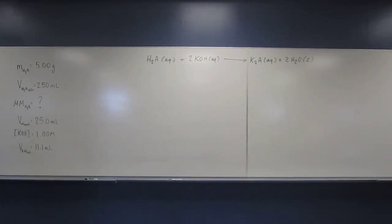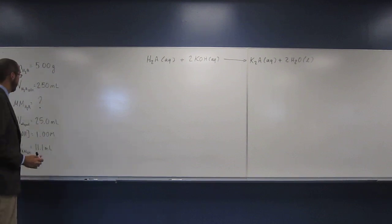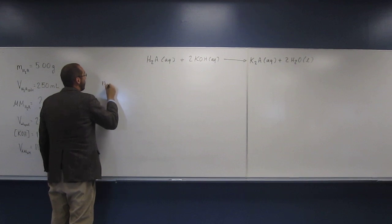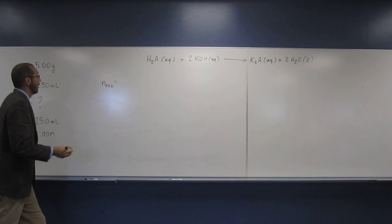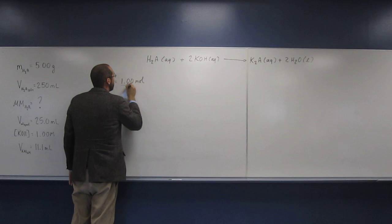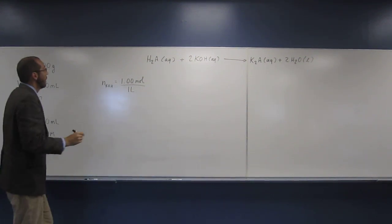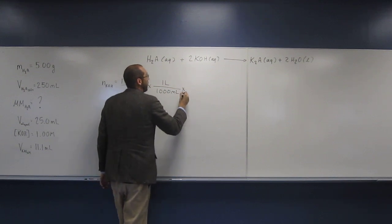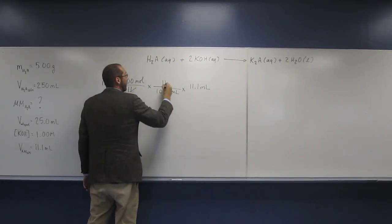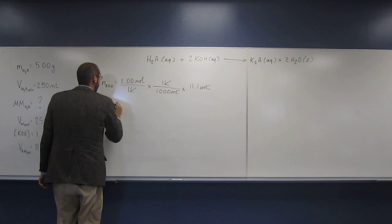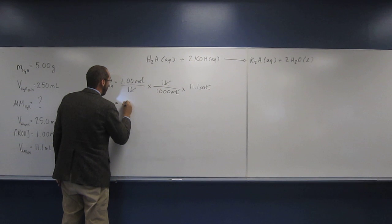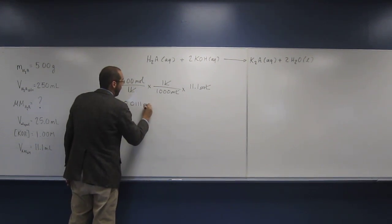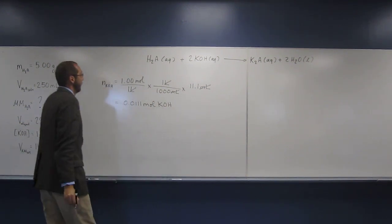So the next thing I would do is figure out how many moles did it take to fully titrate that 25 mil aliquot or portion of the solution that we removed. So we're going to figure out the number of moles of potassium hydroxide. So we've got here the molarity, so 1.00 moles per one liter. And we've got the volume. So we're going to convert this to milliliters and then multiply that. So when we do that, we can do 0.0111 moles of potassium hydroxide.